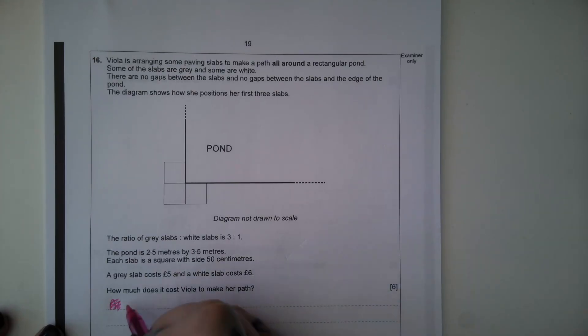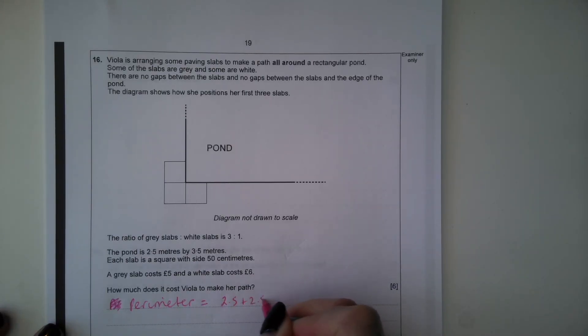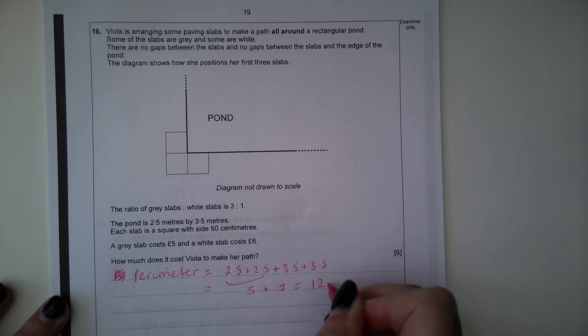So the first thing we're going to do, we're going to find the perimeter of the pond because Viola's going to put these slabs all the way around the outside of her pond. So if the pond is 2.5 metres by 3.5 metres, the perimeter is 2.5 plus 2.5 plus 3.5 plus 3.5. Well, 2.5 plus 2.5 is 5, 3.5 plus 3.5 is 7, so the perimeter of the pond is 12 metres.